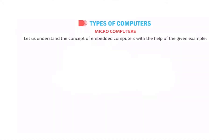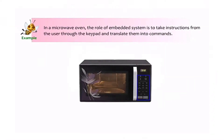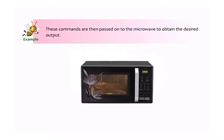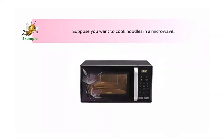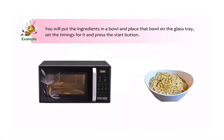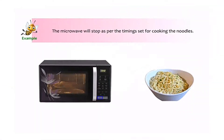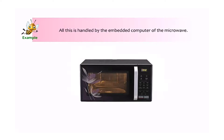Let's understand the working of embedded computers with the help of an example. In a microwave oven, the embedded system takes instructions from the user through the keypad and translates them into commands, which are then passed onto the microwave to obtain the desired output. For instance, to cook noodles, we put the ingredients in a bowl, place it on the glass tray, set the timing, and press the start button. The microwave automatically stops as per the timing set — all handled by the embedded computer of the microwave.